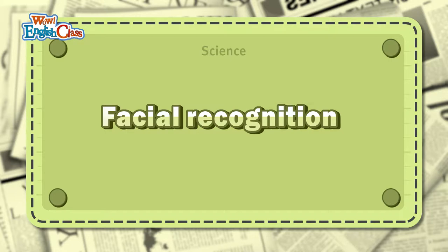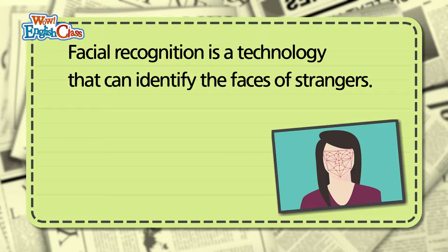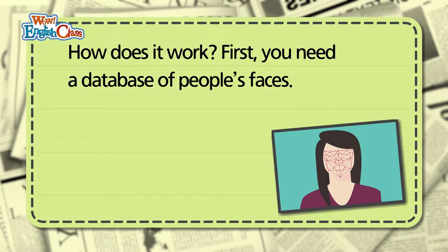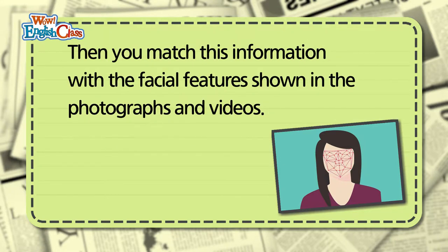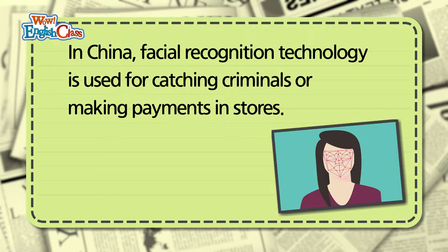Facial Recognition is a technology that can identify the faces of strangers. How does it work? First, you need a database of people's faces. The database includes information on the person's appearance as well as his facial expressions, such as smile or frown. Then, you match this information with the facial features shown in the photographs and videos. In China, facial recognition technology is used for catching criminals or making payments in stores.